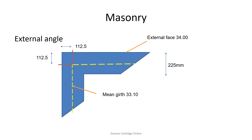Centrelines are calculated on the basis of the number of external angles. This slide shows one external angle from the previous slide. When using the external dimension, for each external angle it is necessary to deduct half the thickness of the wall from both the length and the width, and then multiply this by the number of external angles, which in this case is 4.